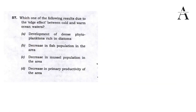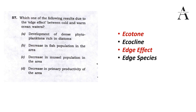Now let's take the question for the day: 'Which one of the following results due to the edge effect between cold and warm currents?' First, we need clarity on edge effect, and also on what happens when cold and warm ocean currents meet. This is a conceptual question. We will discuss four key ecological terms: ecotone, echocline, edge effect, and edge species.